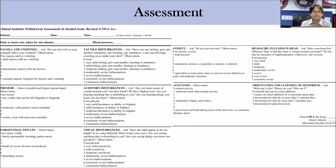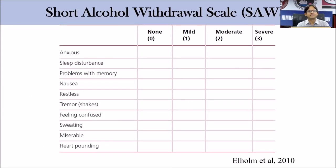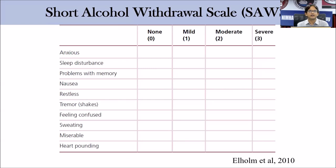Another scale is the Short Alcohol Withdrawal Scale, also called SAWS — a 10-item scale with each item scored from 0 to 3, giving a total score of about 30. Scores of more than 12 indicate that medically assisted withdrawal should be considered.